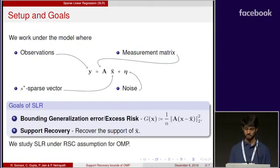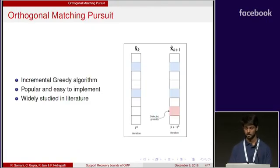We study sparse linear regression under the RSC assumption for our algorithm, Orthogonal Matching Pursuit. Orthogonal Matching Pursuit is an incremental and greedy algorithm. It is very popular and easy to implement, and is also widely studied in the literature.